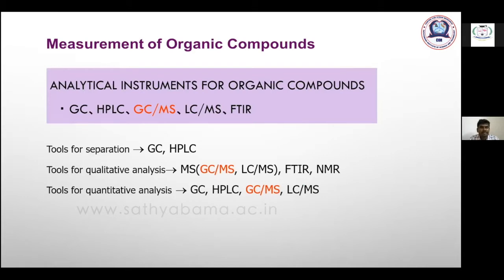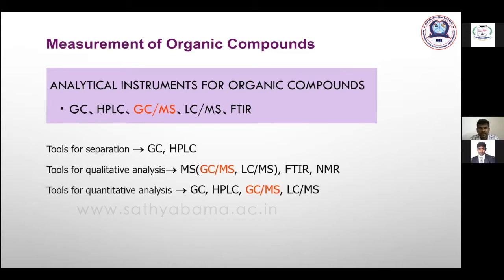Different instruments can be used for measuring organic compounds. For separation, gas chromatography and HPLC are excellent. For qualitative analysis (structural identification), mass spectrometry and NMR can be used. GC-MS and NMR are used for qualitative analysis. For quantitative analysis, GC, HPLC, and GC-MS can all be used to quantify compounds.